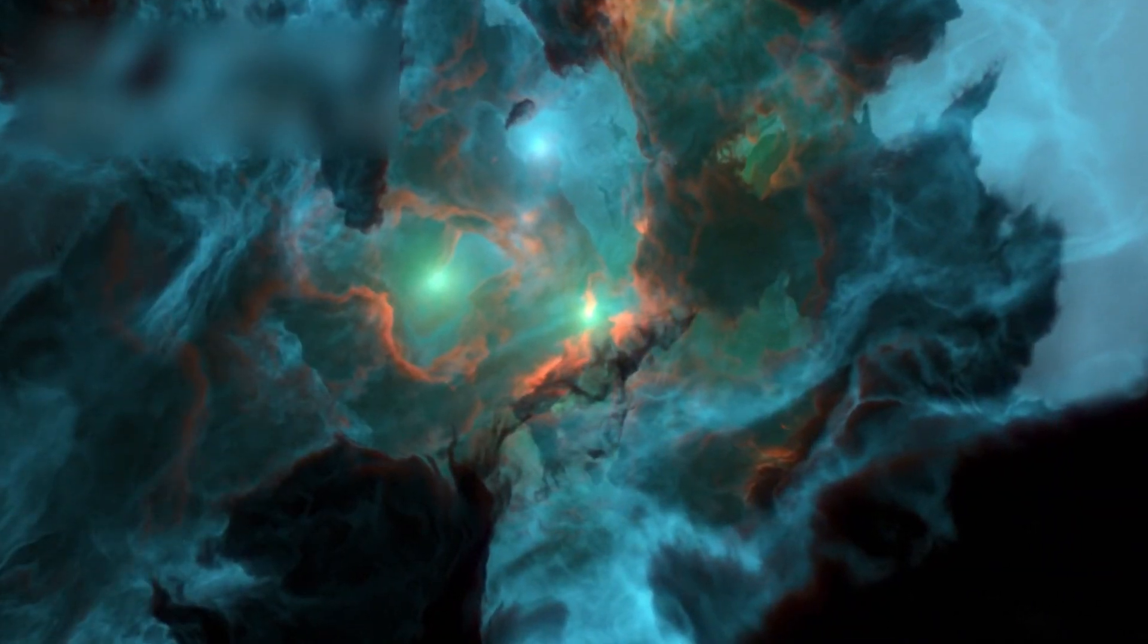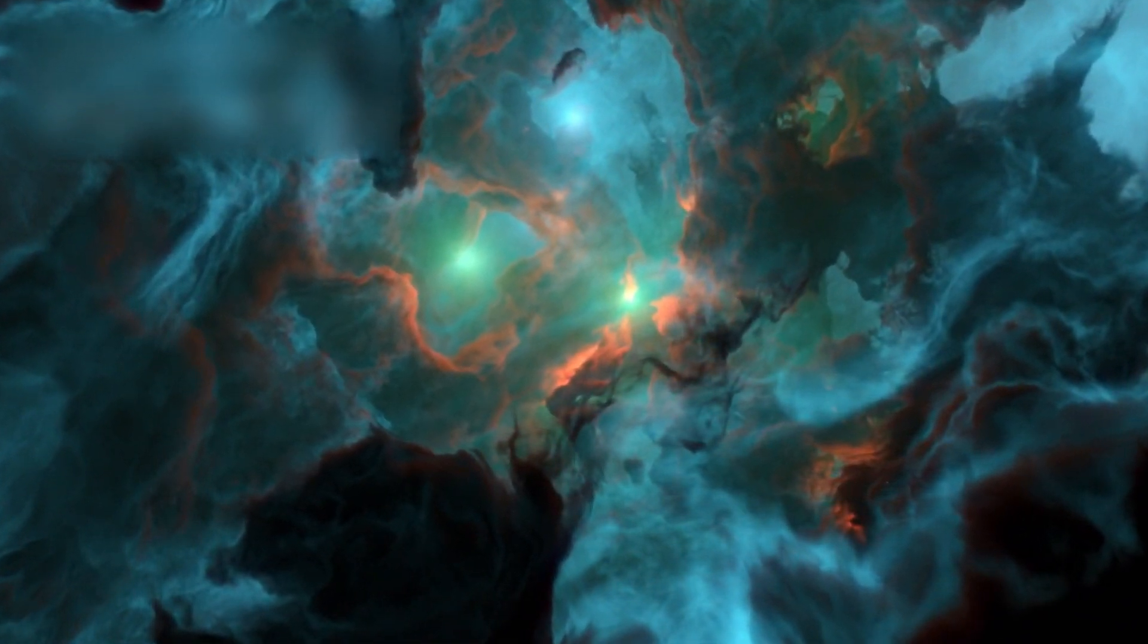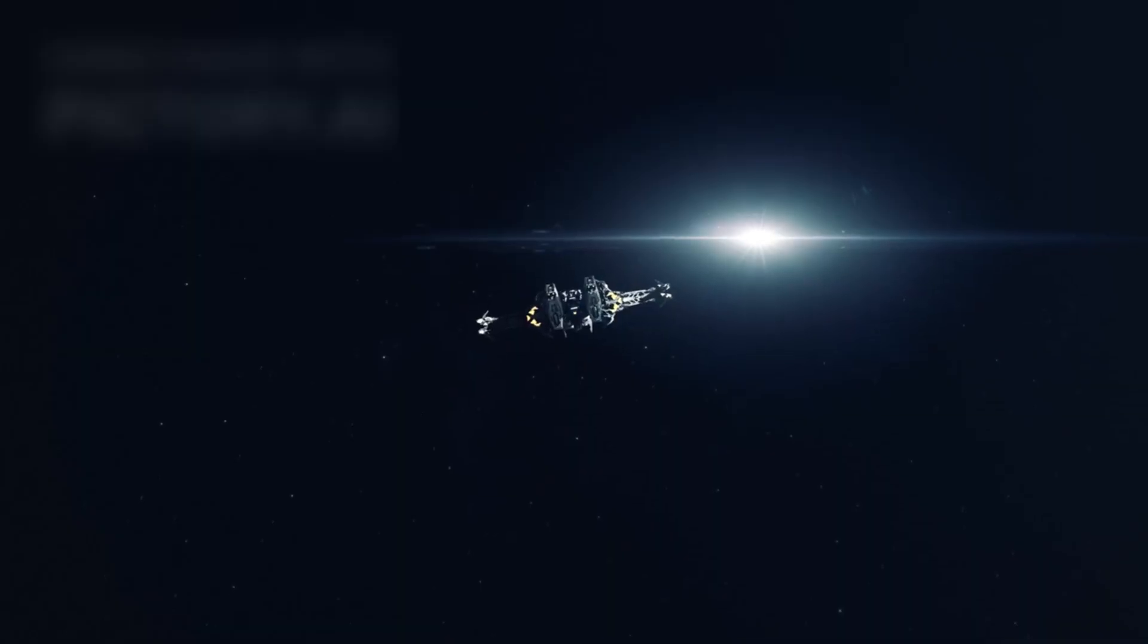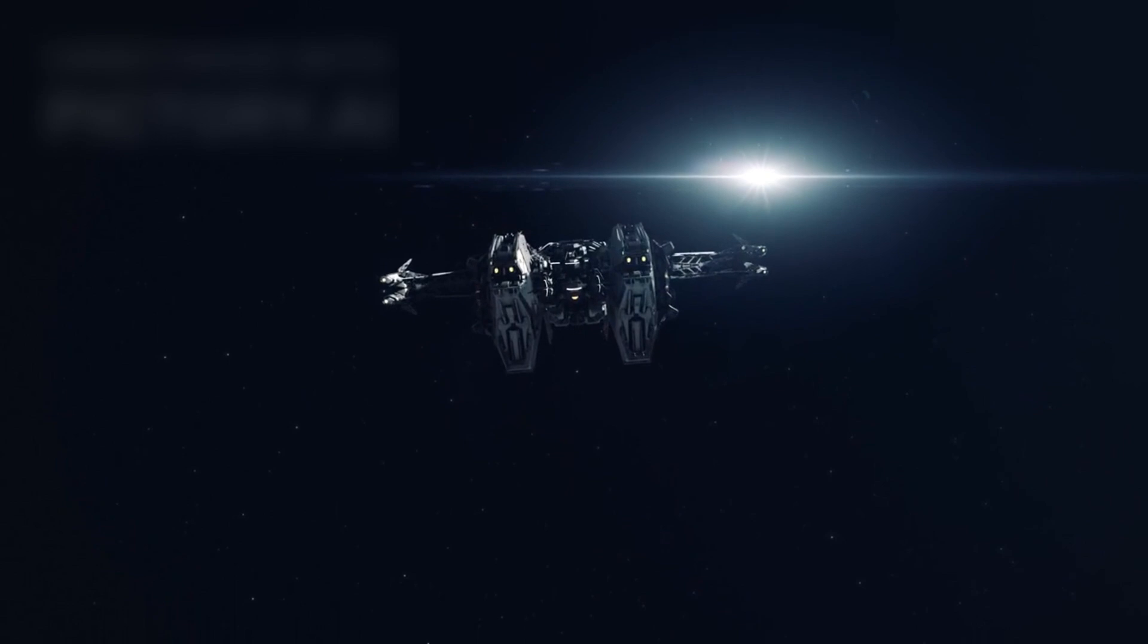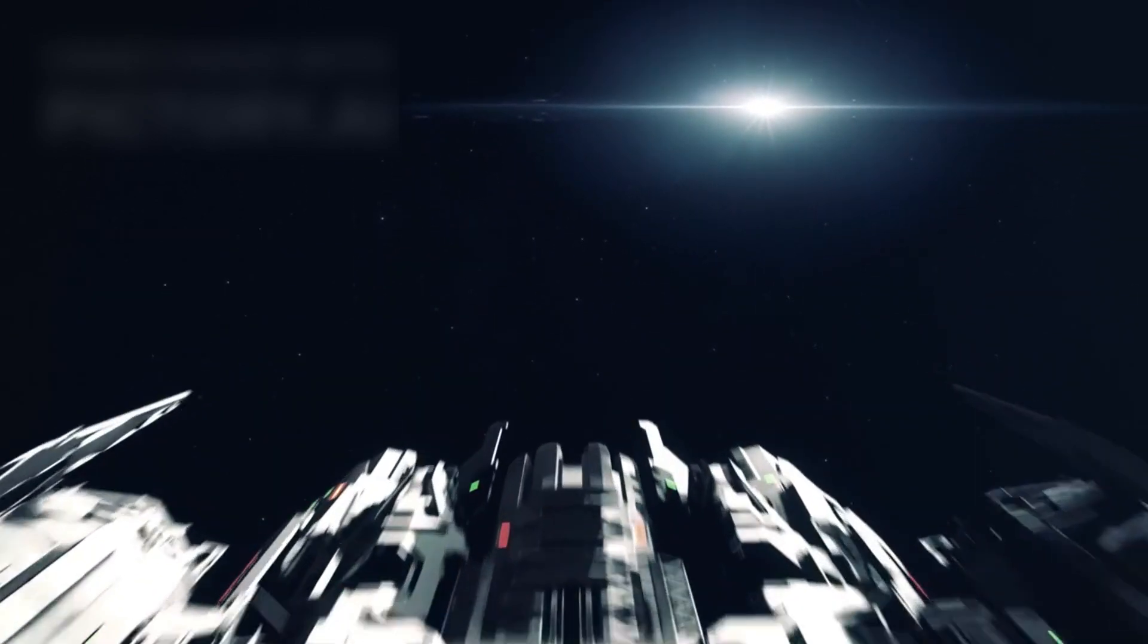Humanity's curiosity about Proxima b has inspired ambitious projects like Breakthrough Starshot, an initiative aiming to send tiny spacecraft to Alpha Centauri. These probes, propelled by powerful ground-based lasers, could travel at 20% of the speed of light, reaching the star system in just 22 years.